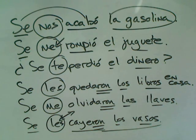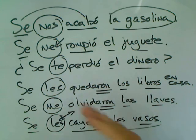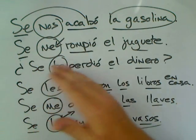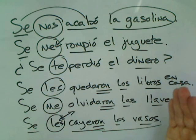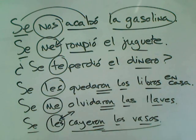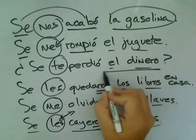The no-fault SE most often occurs when narrating in the preterite tense, but you can also see it in the present perfect: SE NOS HA ACABADO LA GASOLINA, SE ME HA ROTO EL JUGUETE, SE TE HA PERDIDO EL DINERO, SE LES HAN QUEDADO LOS LIBROS EN CASA. The verb always agrees with the subject — singular or plural.